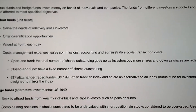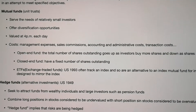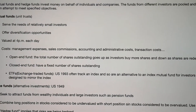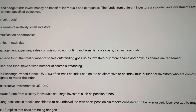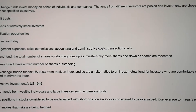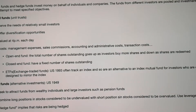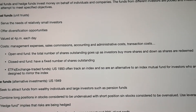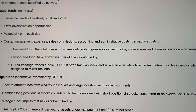There are different types of mutual funds. One is the open-end fund — the total number of shares outstanding goes up as investors buy more shares and goes down as shares are redeemed. Another one is called the closed-end fund, which has a fixed number of shares outstanding.